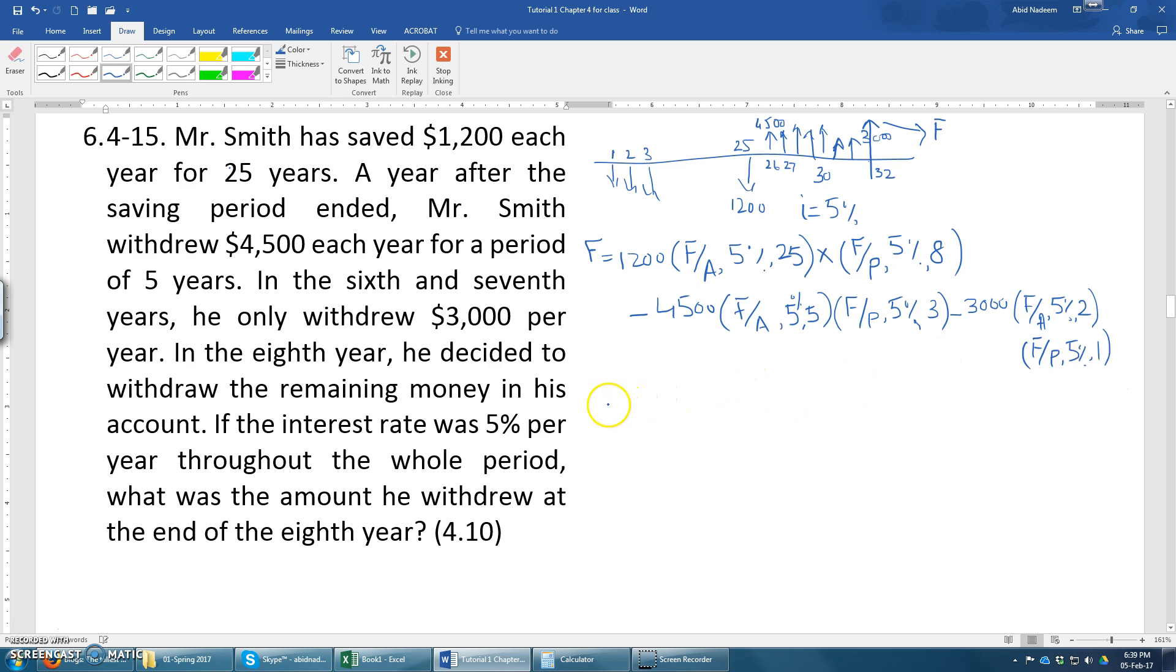So that completes the equation. Now we just need to input the values and then find the answer. Just make a correction: this will be because there will be eight more years, so this will be 33 years. We will find the value of that.